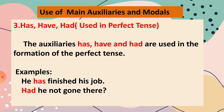The next auxiliaries are has, have, had. These are used in the formation of the perfect tense. Has, have, and had are mostly used in the perfect tense. For example: He has finished his job. Had he not gone there?